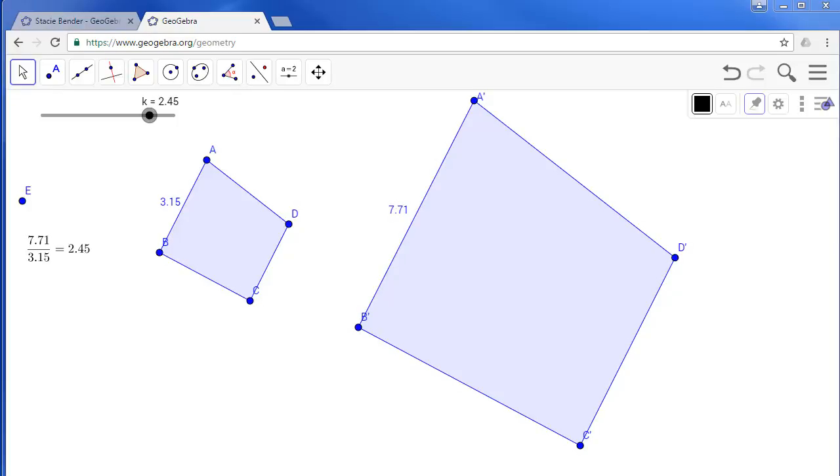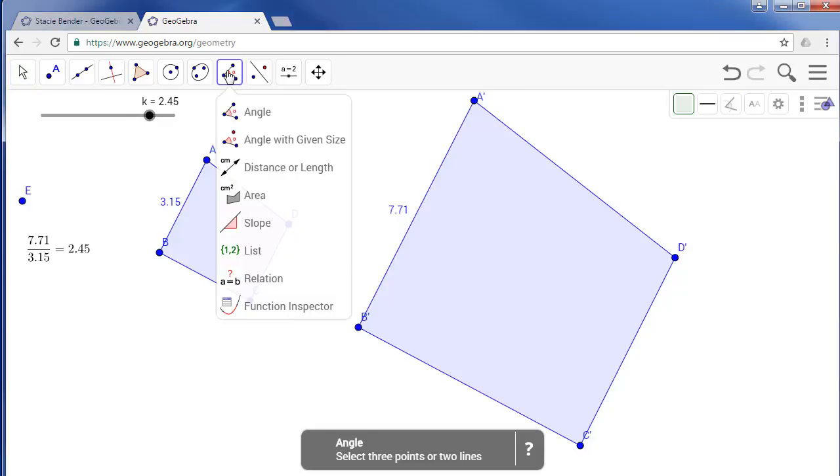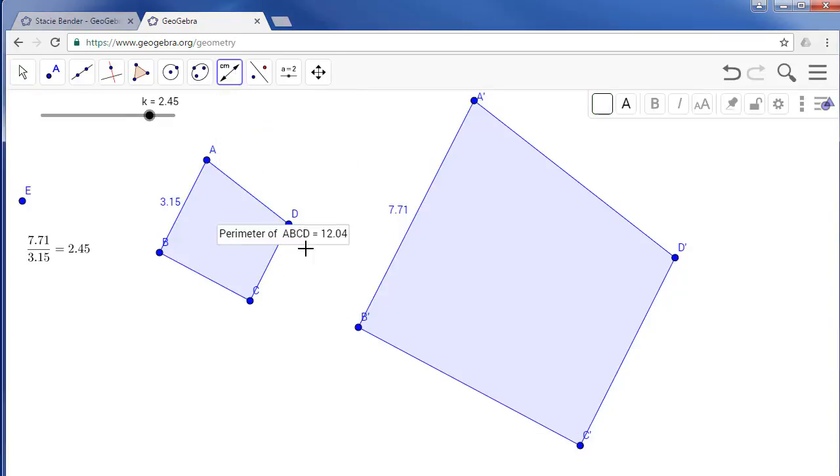Next, let's investigate the ratio of the polygons perimeters. So using our measure tool again, we're going to find the distance or length, but if we click on the polygon, we'll get the perimeter of polygon ABCD and also the perimeter of its image.